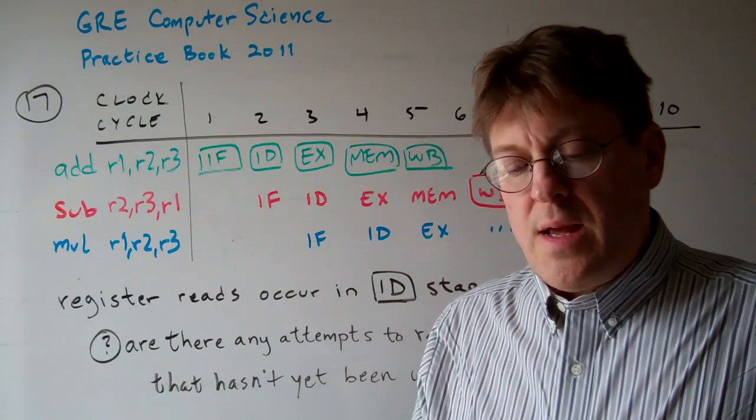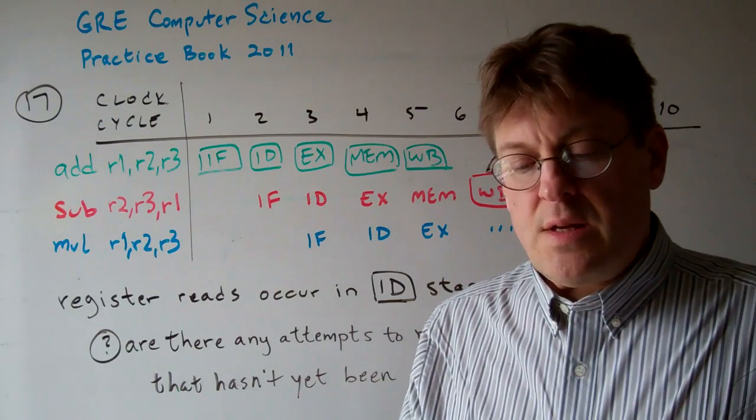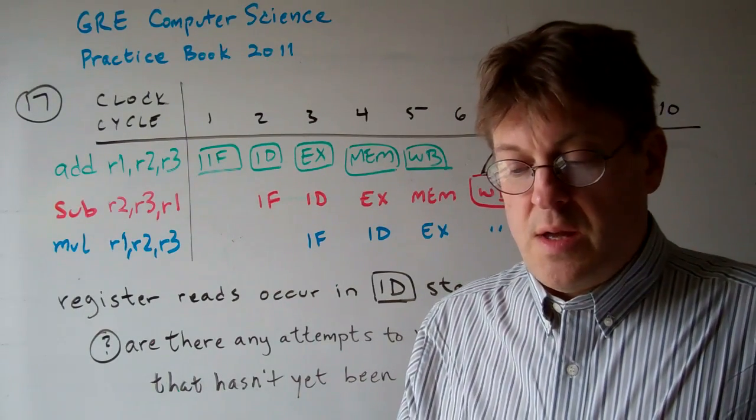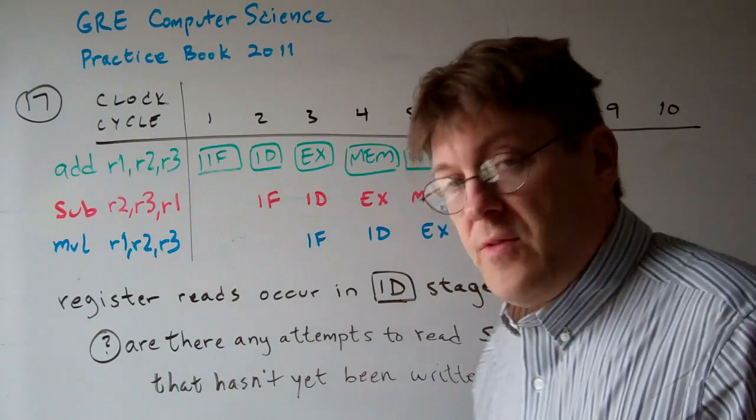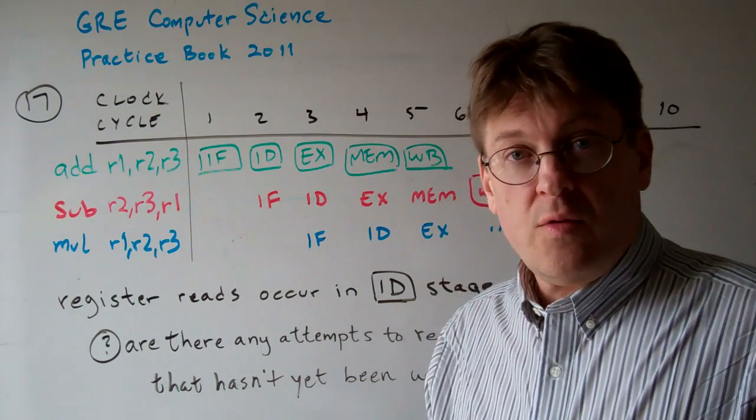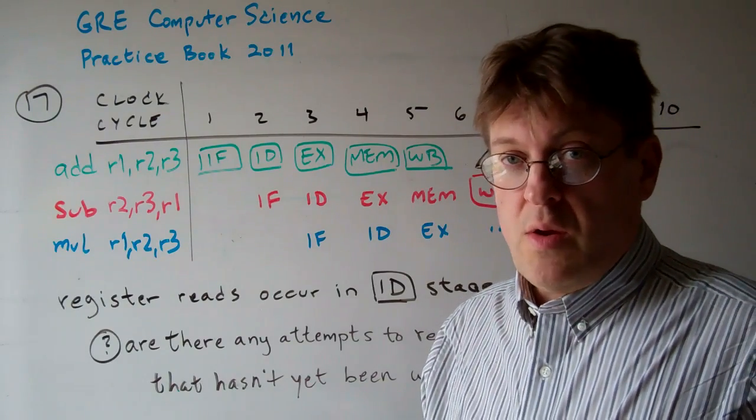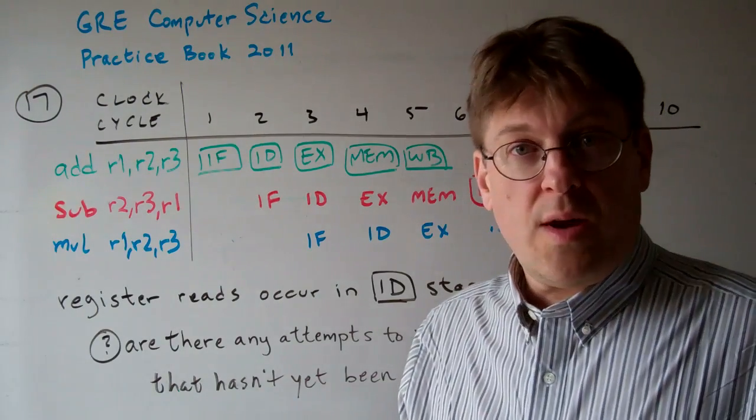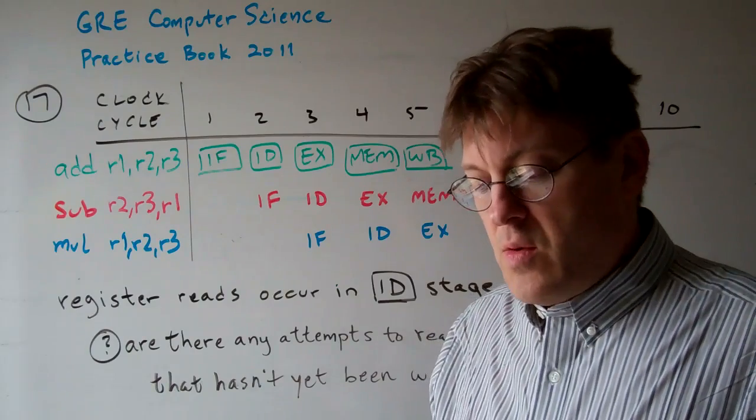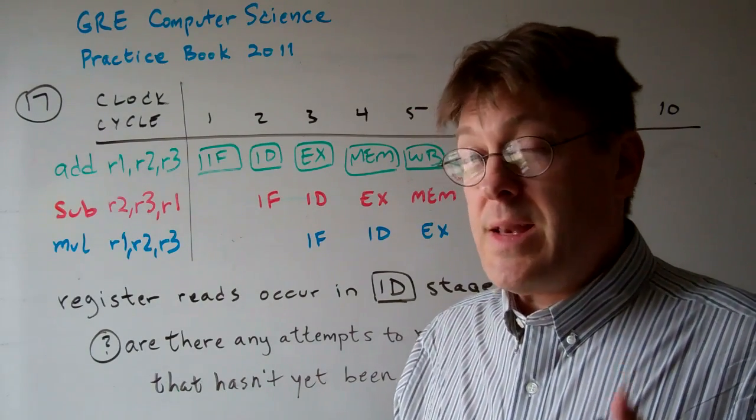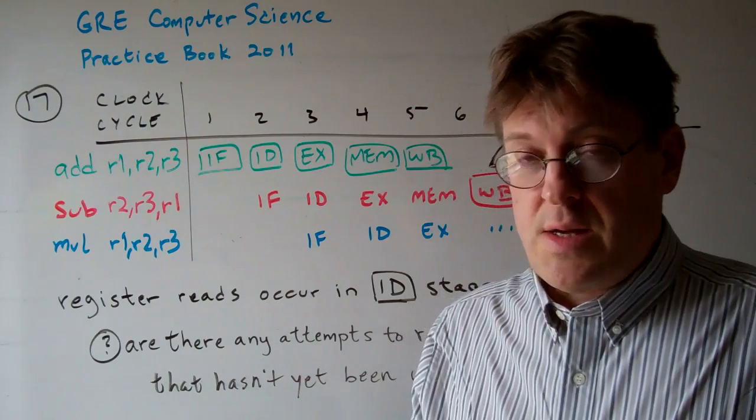Question: how many data hazards does the ID stage need to detect for this instruction sequence? Now, you're probably familiar with RAW hazards (read after write), maybe WAR hazards (write after read), or even WAW hazards (write after write), and things like that. But the question asks, how many hazards does the ID stage need to detect?